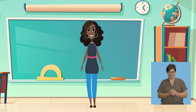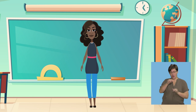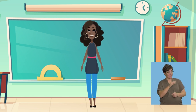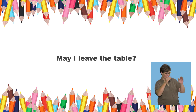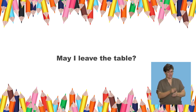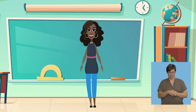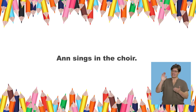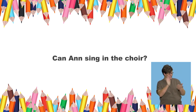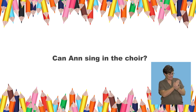Let's do one together. I say: You are allowed to leave the table. You say: May I leave the table? That's right. Listen to the next sentence: Anne sings in the choir. You say: Can Anne sing in the choir? That's right.